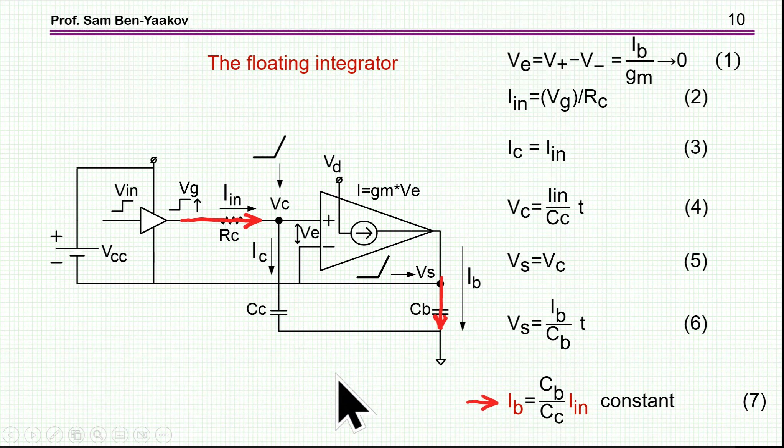So what we have here is a transconductance amplifier. Input is voltage, output is current. We have a driver here. It's a floating driver. And what happens here is that if the gain of this amplifier is high, then the voltage between the two input terminals is approaching zero. And consequently, the voltage across this resistor is actually the input voltage because here we have zero as far as the driver goes.